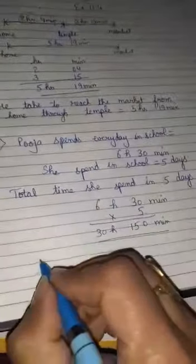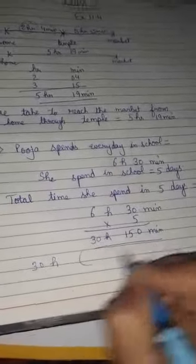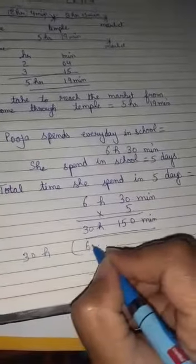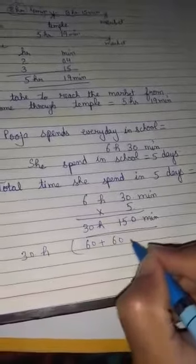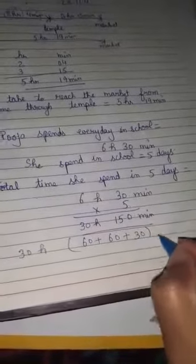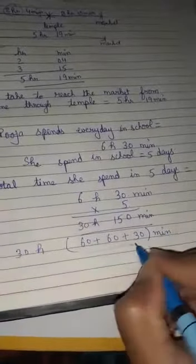Then we can write 30 hours 150 minutes. 60 plus 60, 120 plus 30. Total 150 minutes.